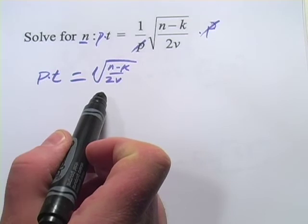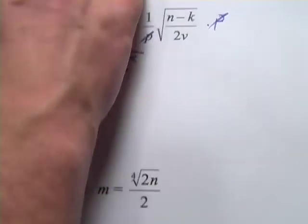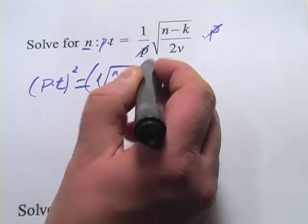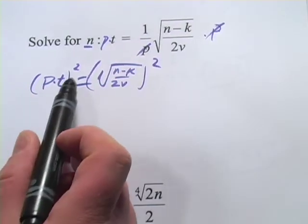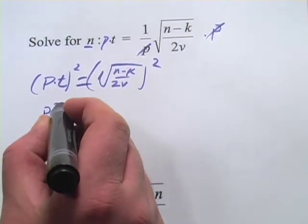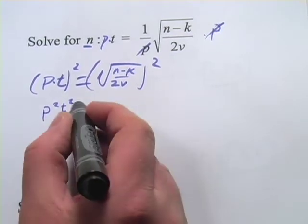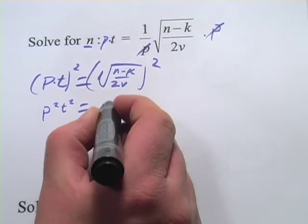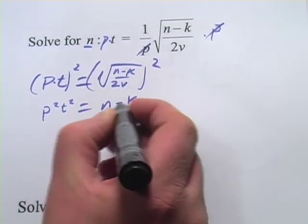Now that we've got the radical sign isolated, we can go ahead and square both sides. Now p times t squared is just p squared times t squared. And then this squaring of the radical sign just undoes the radical sign. So we've got n minus k over 2v.